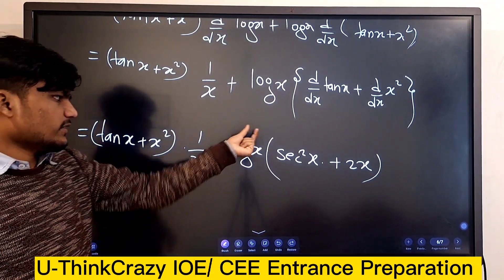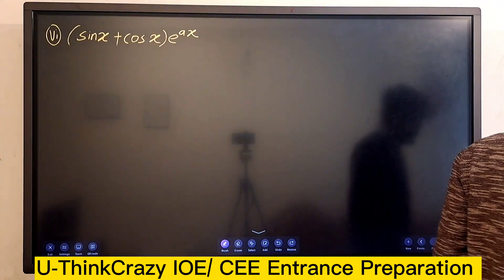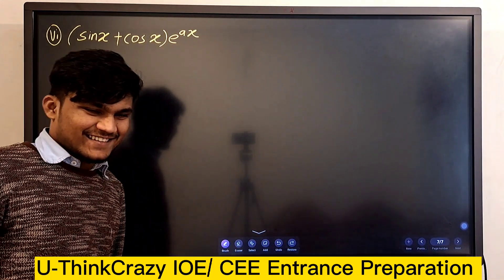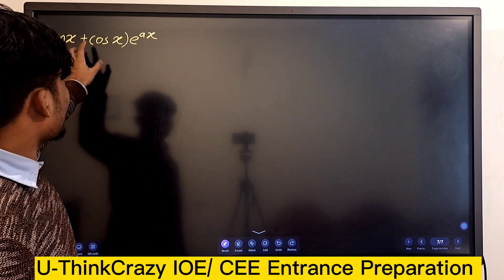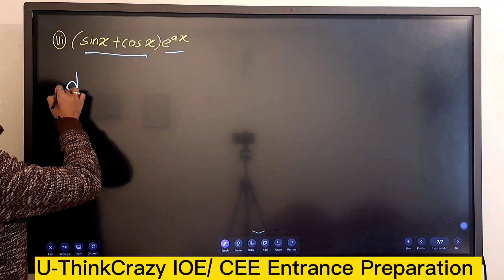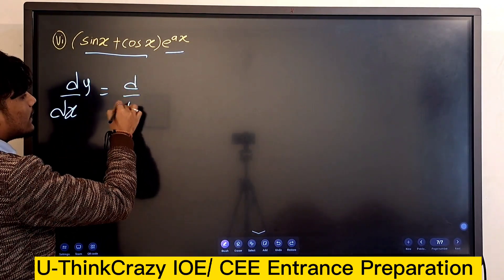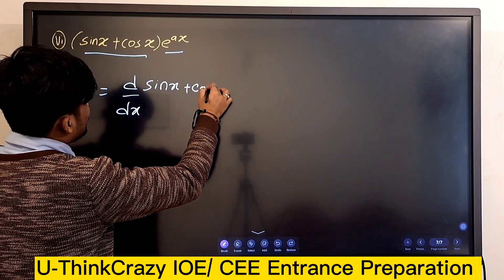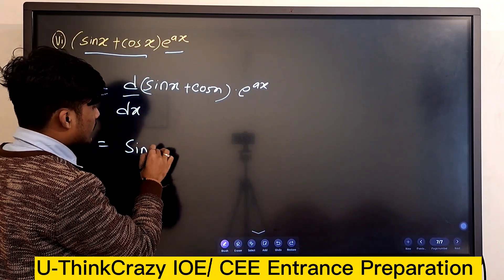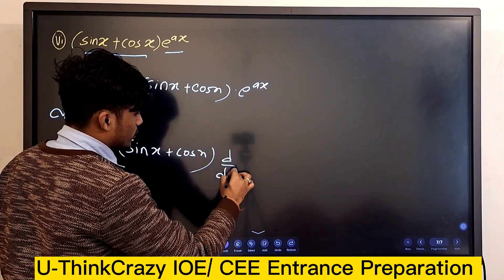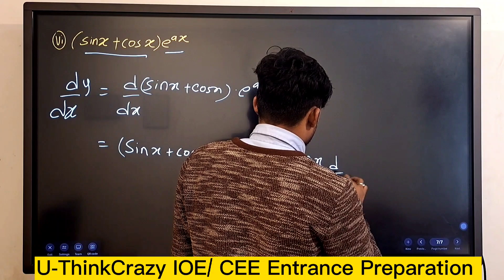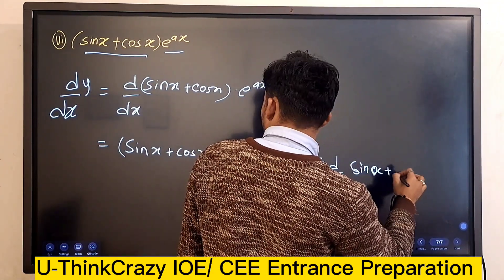Very interesting — one more clear problem. Very simple question. d/dx of y equals d/dx of (sin x + cos x) multiplied by e to the ax. Using the product rule: d/dx of (sin x + cos x), plus the derivative of e to the ax — I love the product rule. Result: sin x plus cos x.